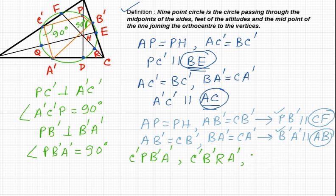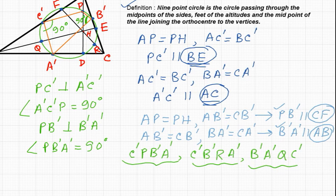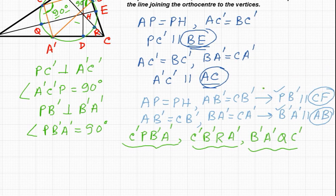And finally B dash, A dash, Q, C dash must also be cyclic. From these three sets of four cyclic points, we can prove that all nine points are cyclic, so the nine-point circle passes through all nine points. Since the angle is 90 degrees, PA dash must be the diameter of the circle. Similarly QB dash and RC dash will also be diameters, as they subtend 90 degrees.